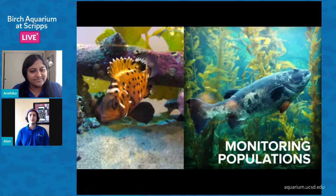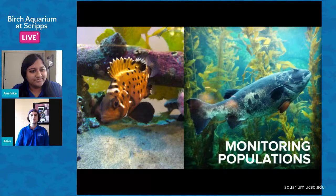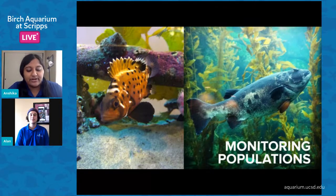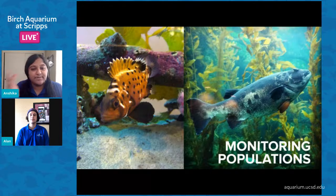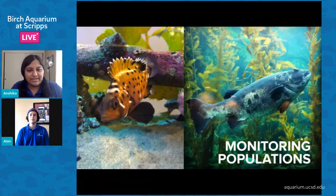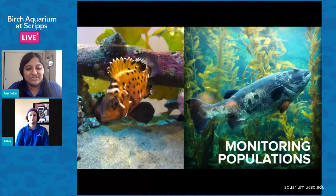Abalone is another really interesting example. Some abalone species are endangered because they were fished to near-extinction — people loved the way they tasted. Endangered species are protected both inside MPAs and outside them. What's really awesome is that when I first started diving I didn't see any abalone at all, but over five, six, seven years I've actually started to see abalone within the marine protected areas, which is really encouraging.